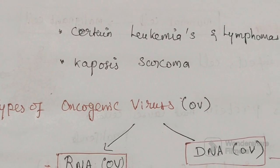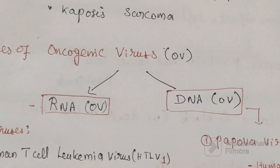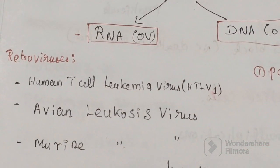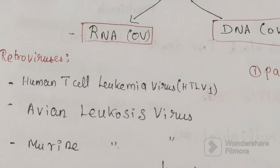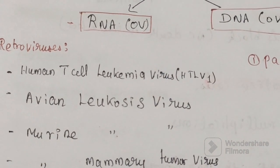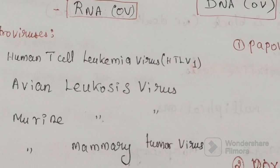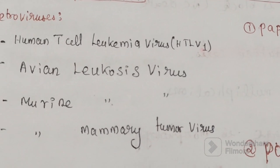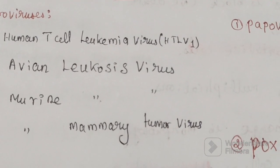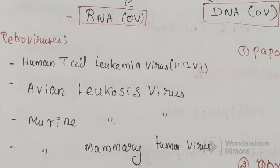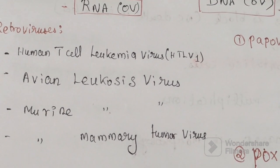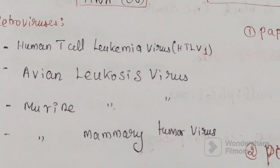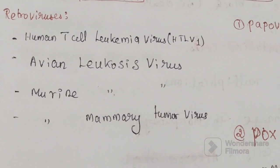There are two types of oncogenic viruses: RNA viruses and DNA viruses. Common RNA oncogenic viruses are retroviruses. Examples include Human T-cell Leukemia Virus 1 (HTLV-1), avian leukosis virus, murine leukosis virus, and murine mammary tumor virus.